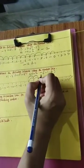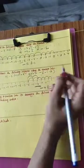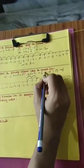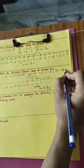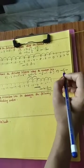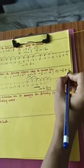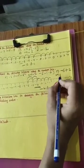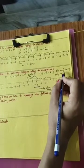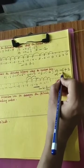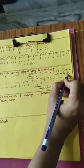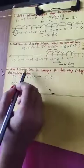Before completing the number line, solve algebraically: minus 6 minus, open bracket minus 2. Minus minus becomes plus, so minus 6 plus 2 equals minus 4. Minus 4 is shown here on the number line.